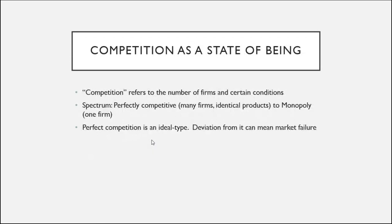Competition, on the other hand — which is primarily what economists mean when they talk about competition — refers to a situation where everything is static. Competition in this case tends to refer to the number of firms and certain conditions in a given market. We have a spectrum of competition, and on one end you have perfectly competitive markets, where there are many, many firms.